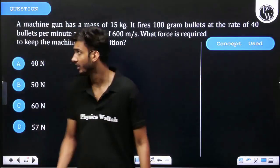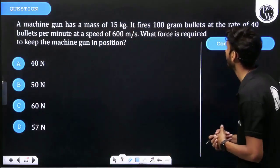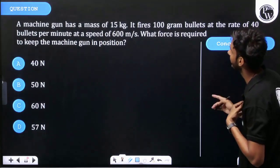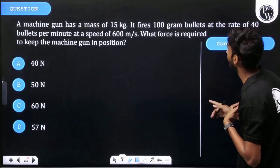Okay, let's see the question. A machine gun has a mass of 15 kg. It fires 100 gram bullets at the rate of 40 bullets per minute at a speed of 600 meters per second. What is the force required to keep the machine gun in position?